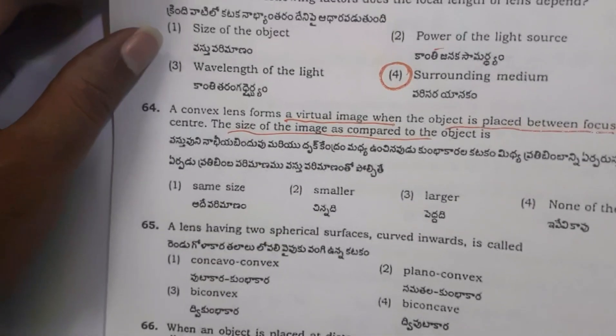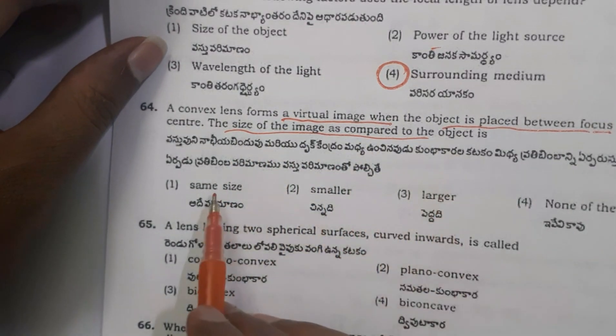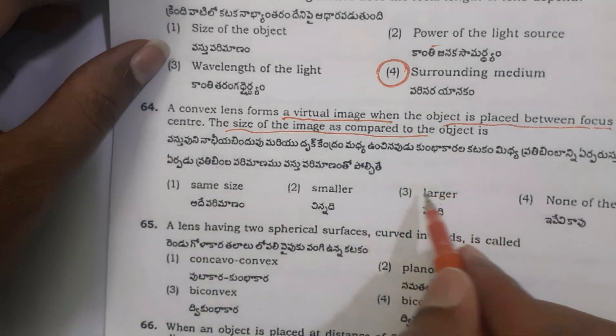So the size of the image compared to size of object: options are same size, smaller, larger, or none of this. So the answer is larger.